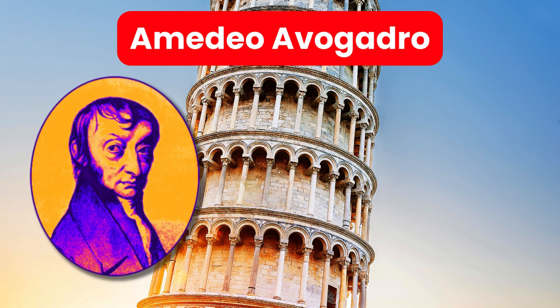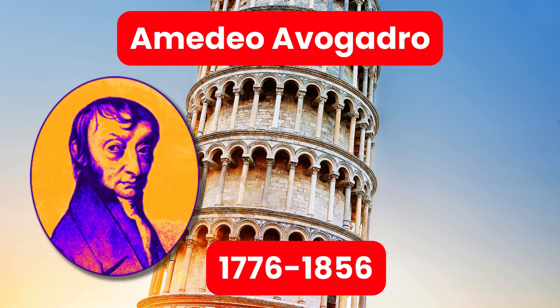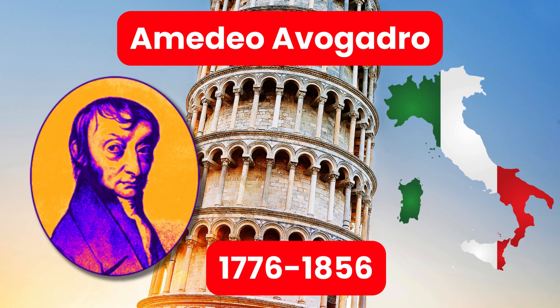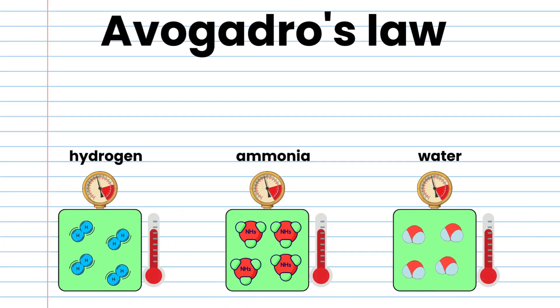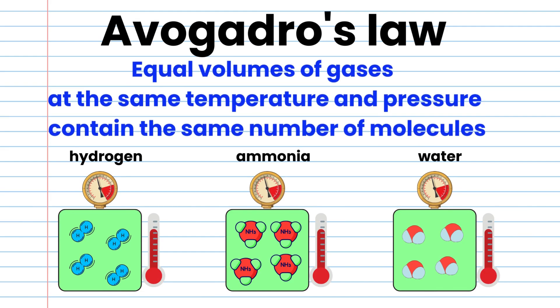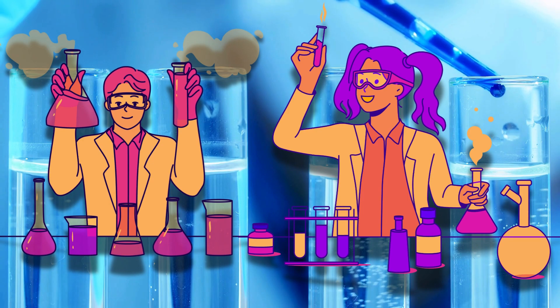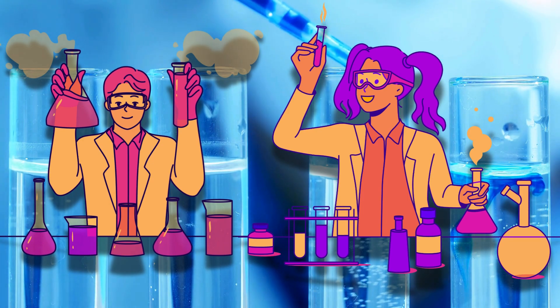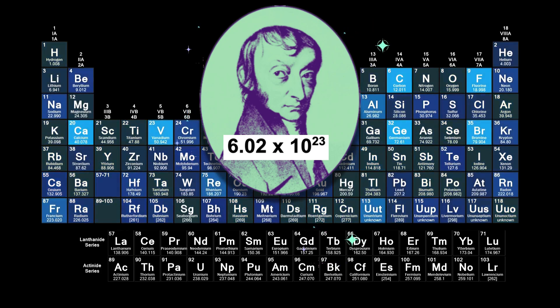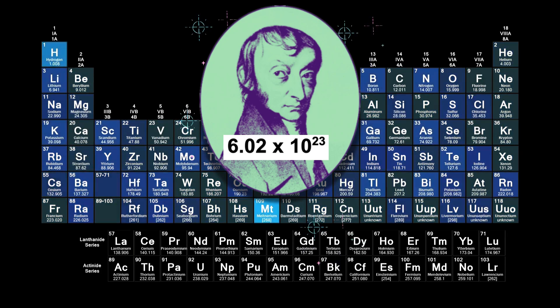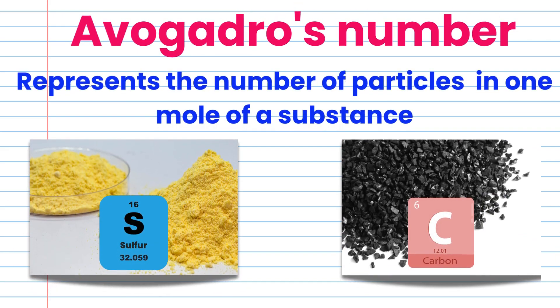This number is called Avogadro's number and is named in honor of Amedeo Avogadro (1776–1856), an Italian scientist. Avogadro proposed Avogadro's law, which states that equal volumes of gases at the same temperature and pressure contain the same number of molecules. Avogadro himself didn't actually determine the exact value of Avogadro's number, but his name is immortalized in chemistry through Avogadro's number, which represents the number of particles — atoms, molecules, ions, etc. — in one mole of a substance.